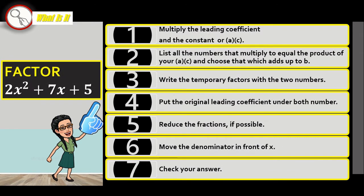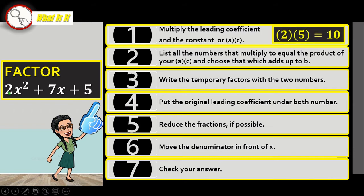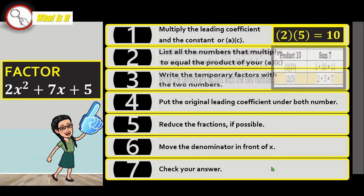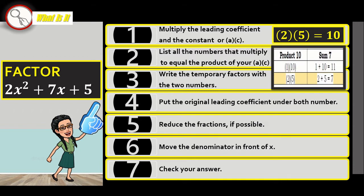Factor 2X squared plus 7X plus 5. Step 1: Multiply A and C, which is 2 for A and 5 for C. 2 times 5 equals 10. Step 2: List all the numbers that multiply to equal the product of your AC, or in this case 10.